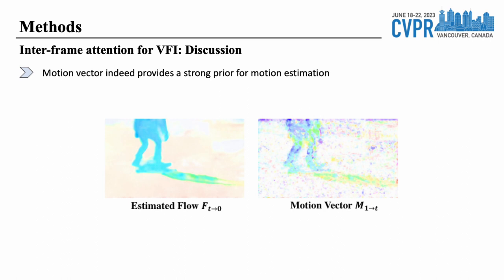To demonstrate that the similarity of the same regions between frames can be captured by interframe attention, we compare the optical flow estimated by our trained model with the obtained motion vector. As shown below, motion vectors maintain a high degree of consistency with the predicted optical flow despite minor noise, which implies that IFA does have the ability to discriminate different regions and can provide a strong prior for motion estimation.